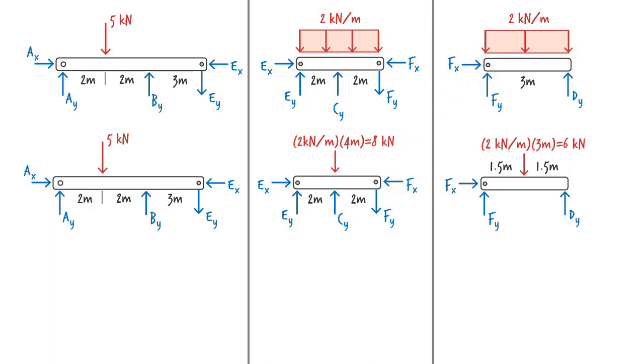Since we can write three equilibrium equations for each free body diagram, we end up with a total of nine equations in nine unknowns.